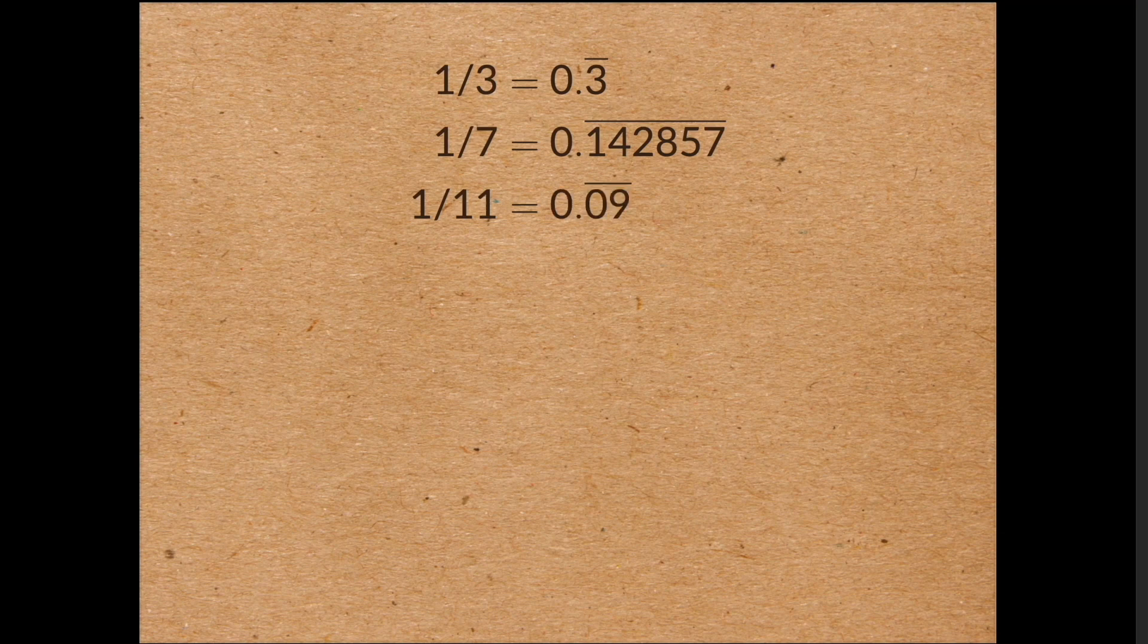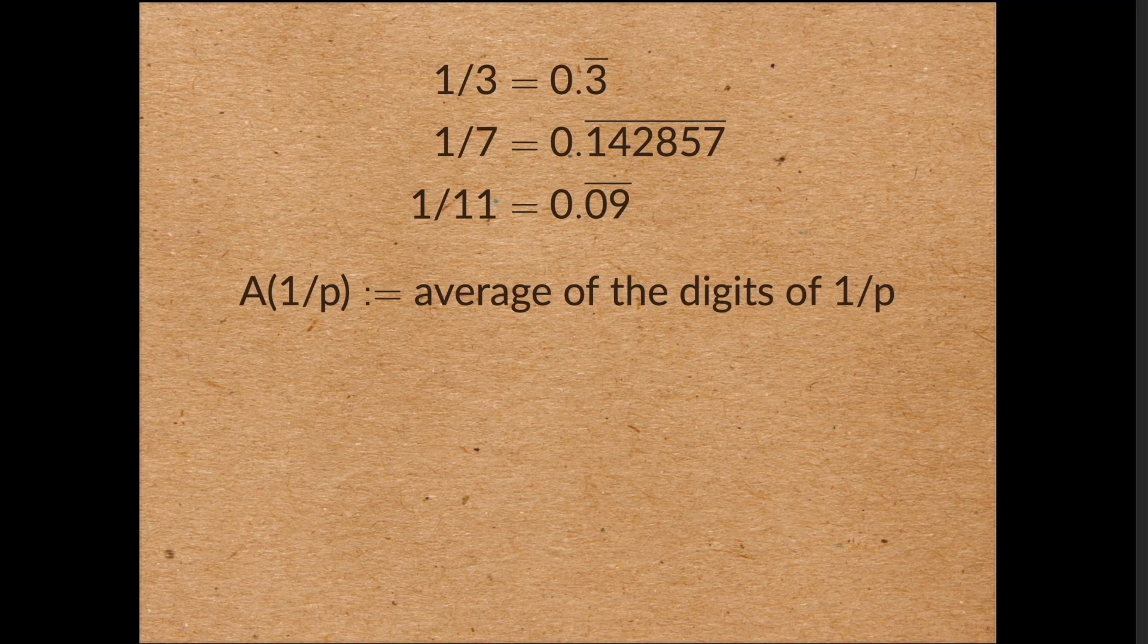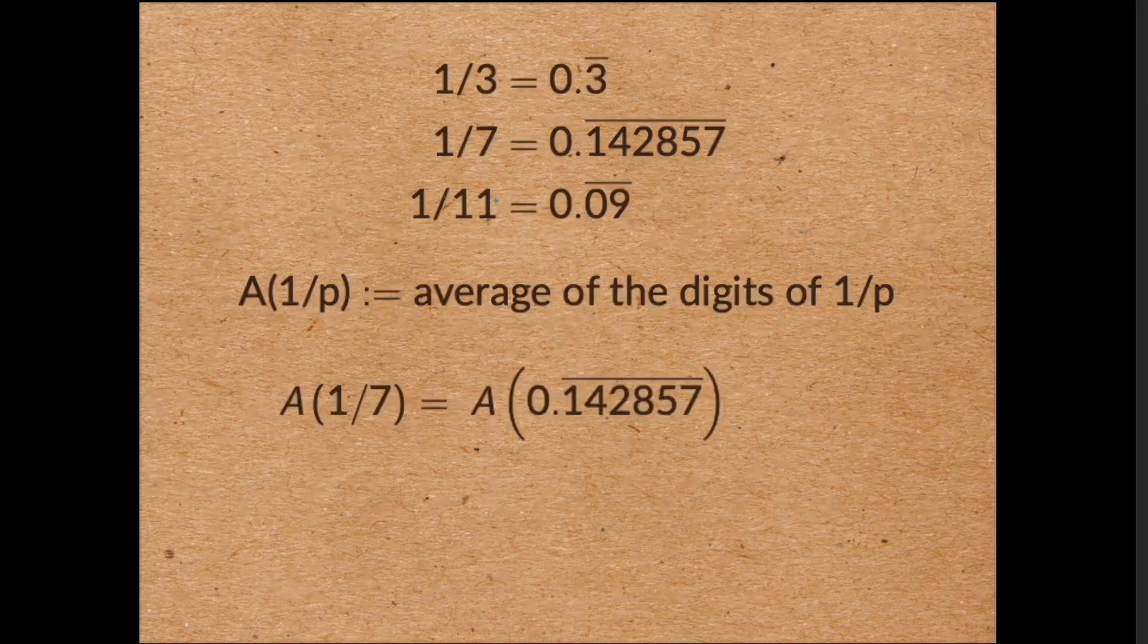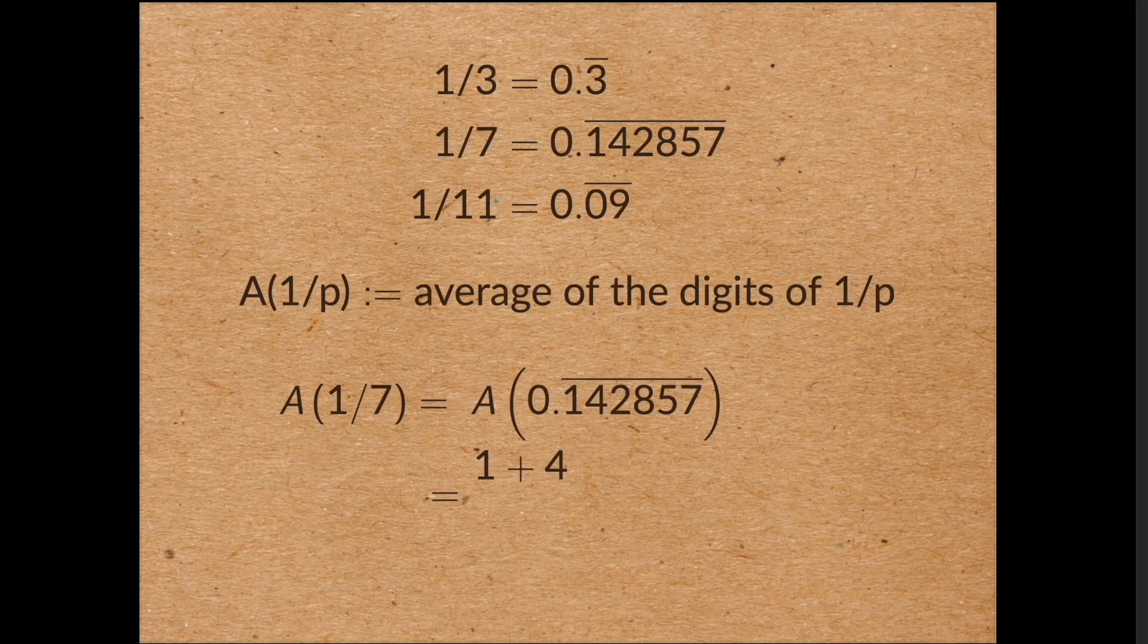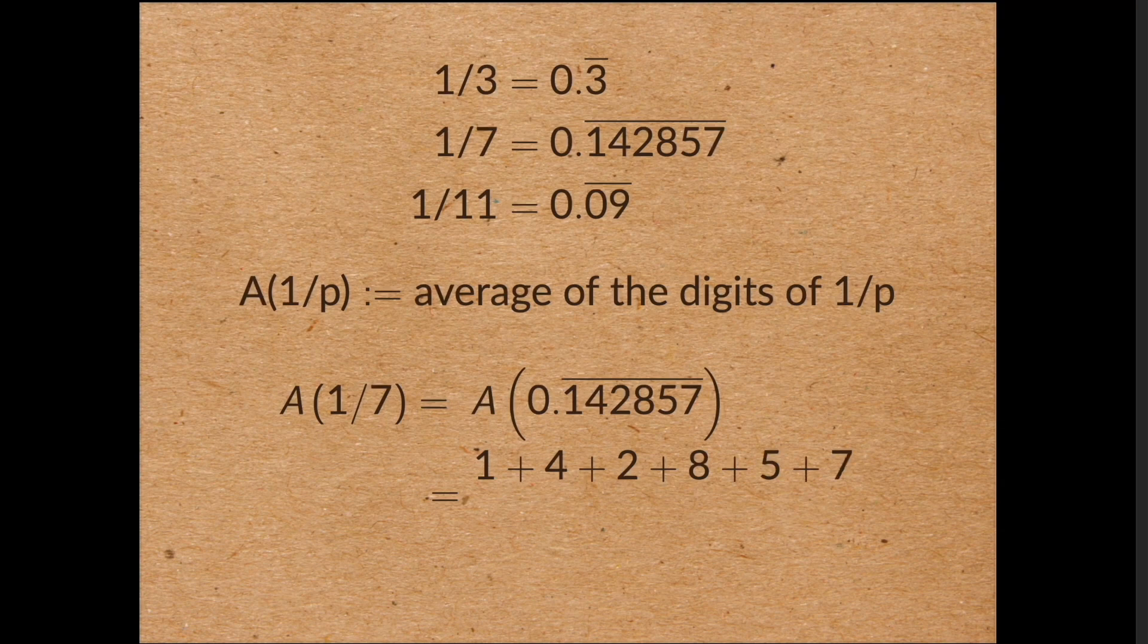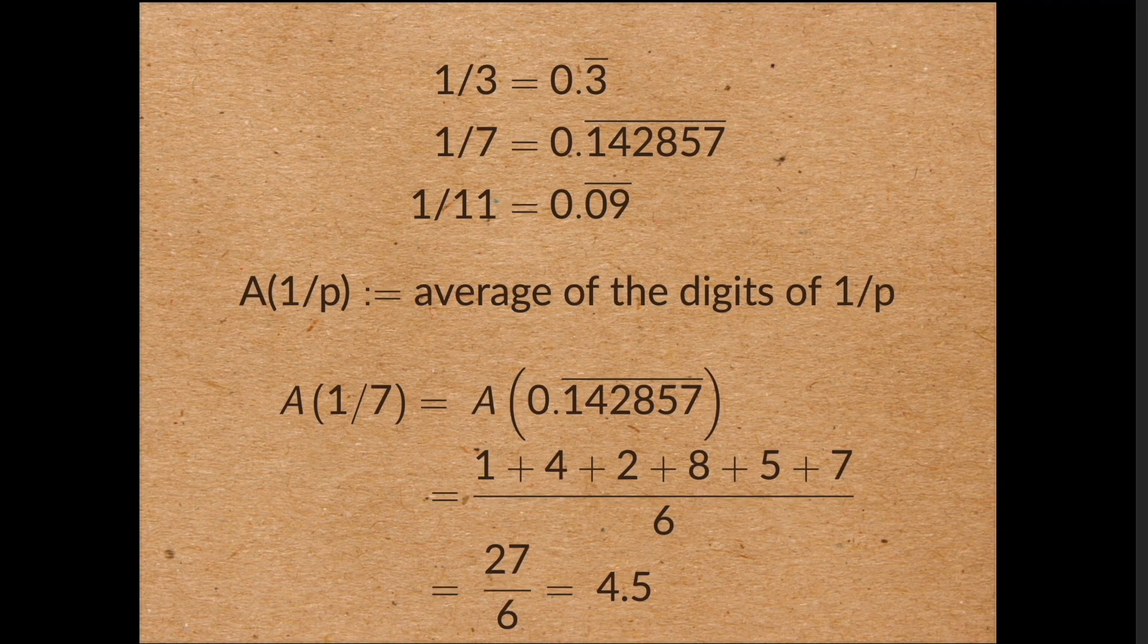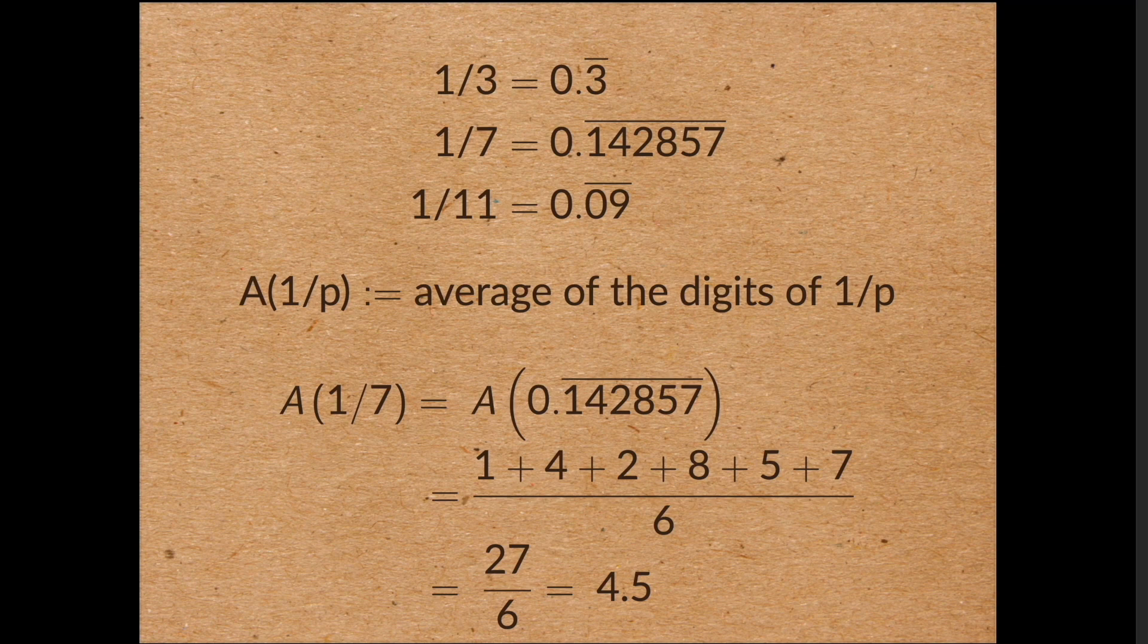So let's define a function a of 1 on p by taking the average of the digits which occur in the decimal expansion of 1 on p. For example, a of a seventh is equal to 1 plus 4 plus 2 plus 8 plus 5 plus 7 divided by 6 is equal to 4.5. The function a will be the main player in this video.